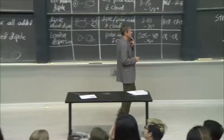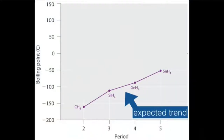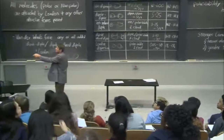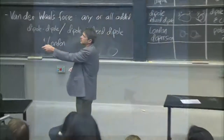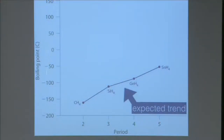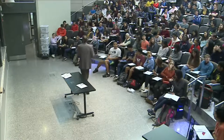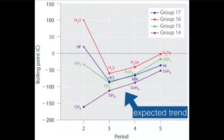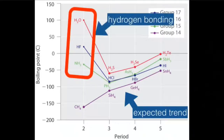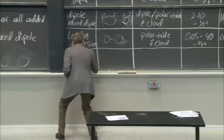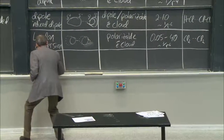There is one more type of intermolecular bond. Looking at trends in boiling points for series like methane, silane, germane — all nonpolar, all increasing as expected from van der Waals. But NH₃, HF, and H₂O show anomalously high boiling points. This anomaly is due to hydrogen bonding, a very unique and special kind of intermolecular bond.